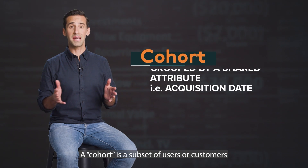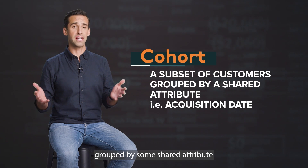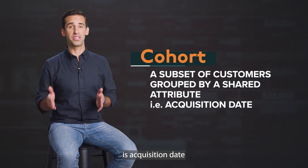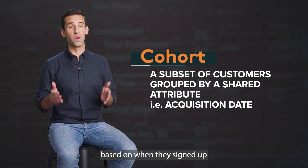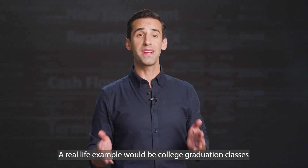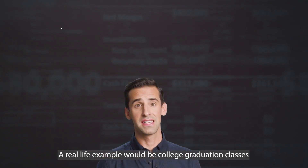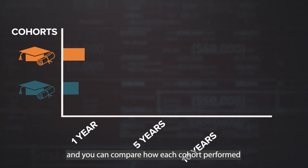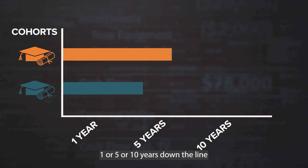A cohort is a subset of users or customers grouped by some shared attribute. In many cases, the key grouping attribute is acquisition date, meaning segmenting your users based on when they signed up — we call this an acquisition cohort. A real life example would be college graduation classes: each year is a different cohort, and you can compare how each cohort performed one, five, or ten years down the line.